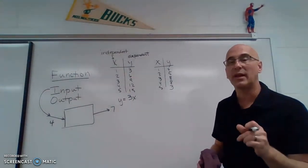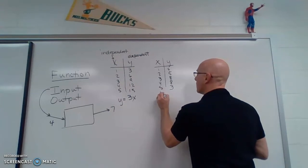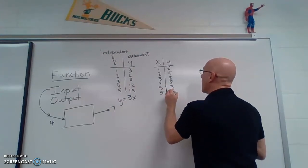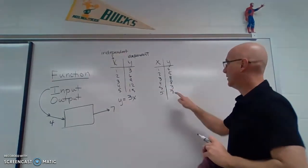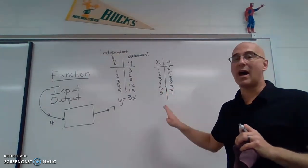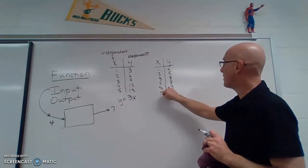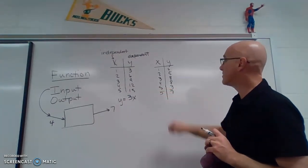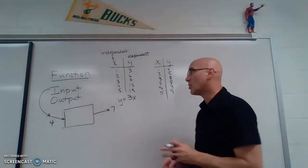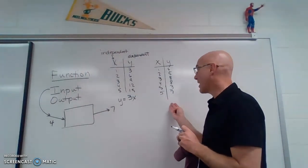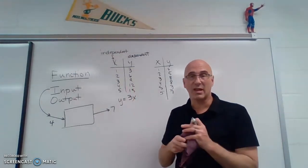Now what would happen if I said for 5, I put it in again and I got a 7. This would not be a function because sometimes I put 5 in and I get 3. Sometimes I put 5 in and I get 7. So this would now not be a function. So I can't write a rule for that. I just can't do that.